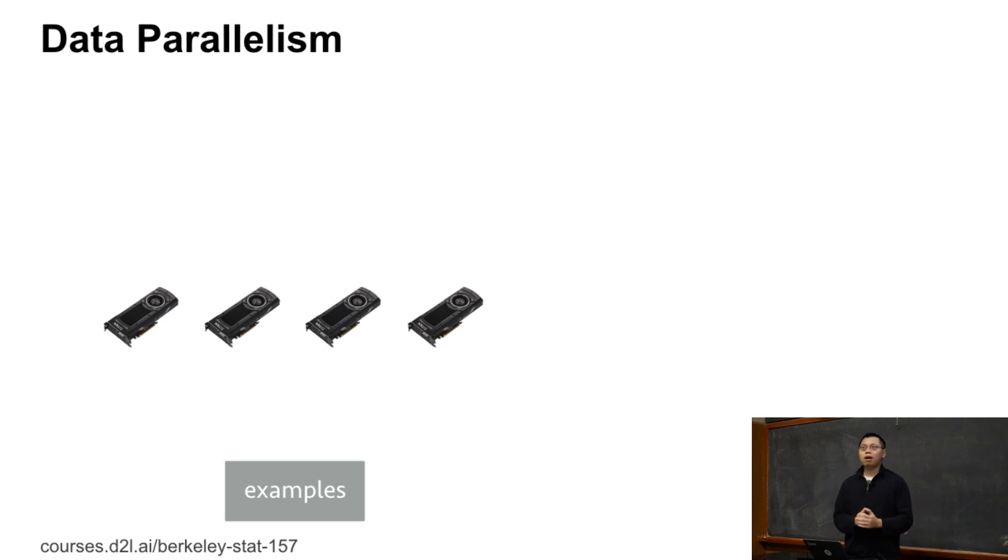So data parallelism means that for each data batch, we can run the data batch in multiple GPUs. So here the example is just a batch, a batch of data. For example, we have 100 examples in the batch.